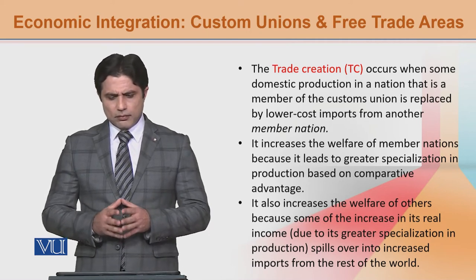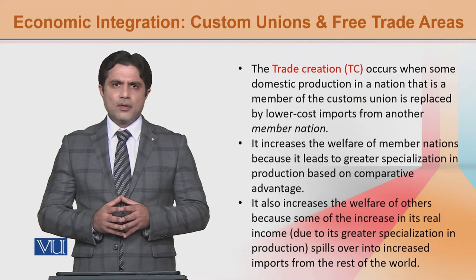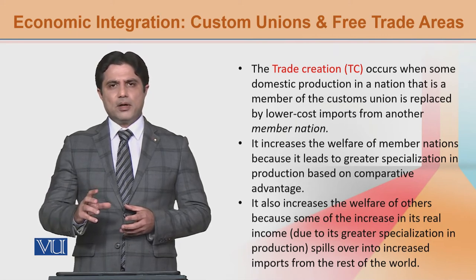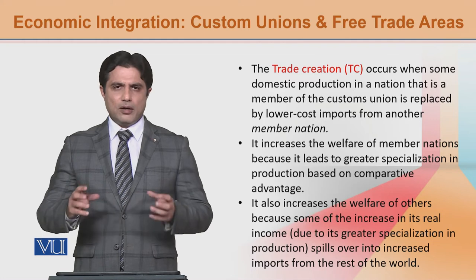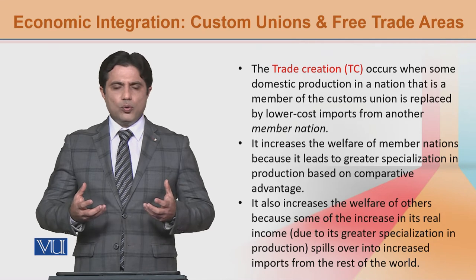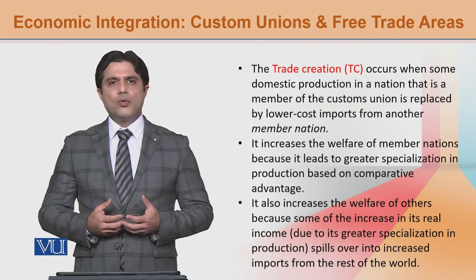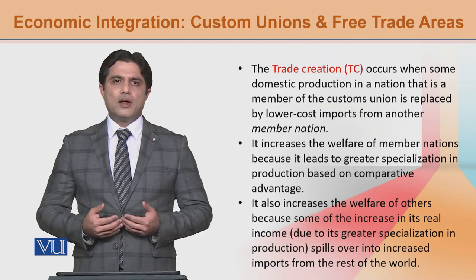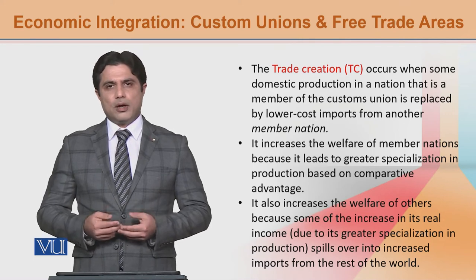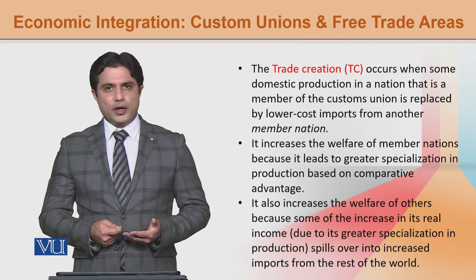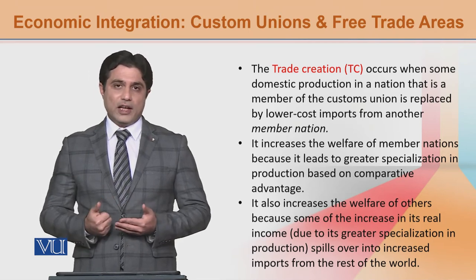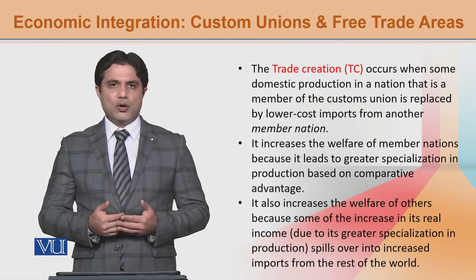This feature of custom union members works the same way because every custom union member will have an abundance of certain factors, or the cost of producing a particular commodity is lower. So they will produce those commodities where the cost of production is less, and import those commodities where the cost of production is high.